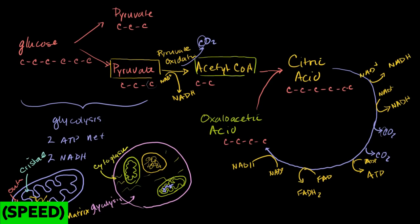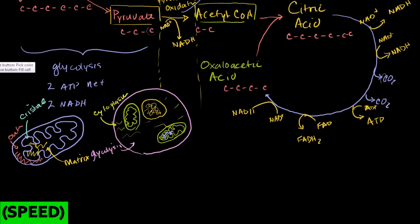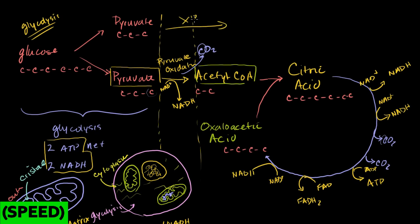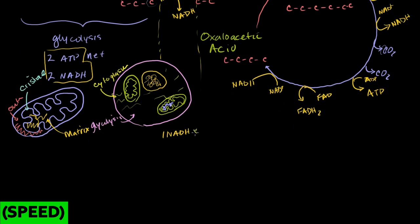Let's account for what we have. Everything to the left of this line is glycolysis — two net ATPs and two NADHs. Then most introductory textbooks give the Krebs cycle credit for pyruvate oxidation, but that's really a preparatory stage. Pyruvate oxidation produced one NADH per pyruvate. Since glycolysis produced two pyruvates, we multiply by two — so pyruvate oxidation times two gives us two NADHs.